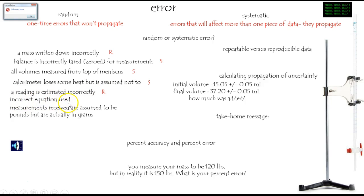The incorrect equation was used. Well that will affect every single piece of data. That's a systematic situation. The measurements received are assumed to be in pounds, but they're actually in grams. This is not unlike the Mars Climate Orbiter error where units were completely wrong. That's seriously systematic.